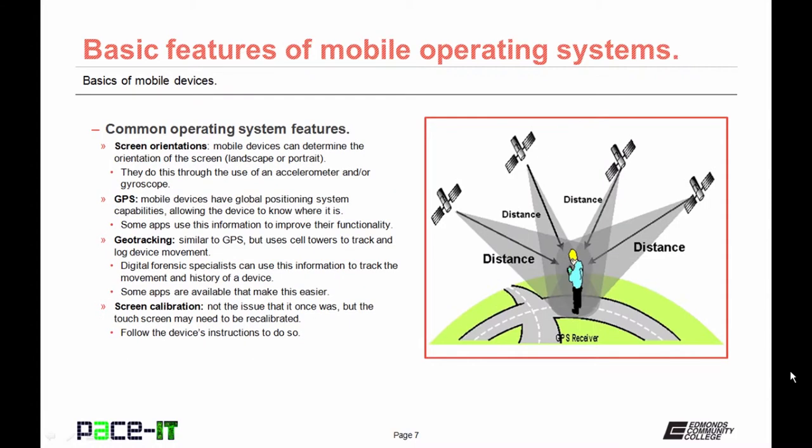Now let's talk about common operating system features. We begin with screen orientation. Mobile devices can determine the orientation of their screen — either landscape or portrait — through the use of an accelerometer and/or gyroscope. That means as you turn the screen sideways or upright, it'll flip so that the orientation remains correct.